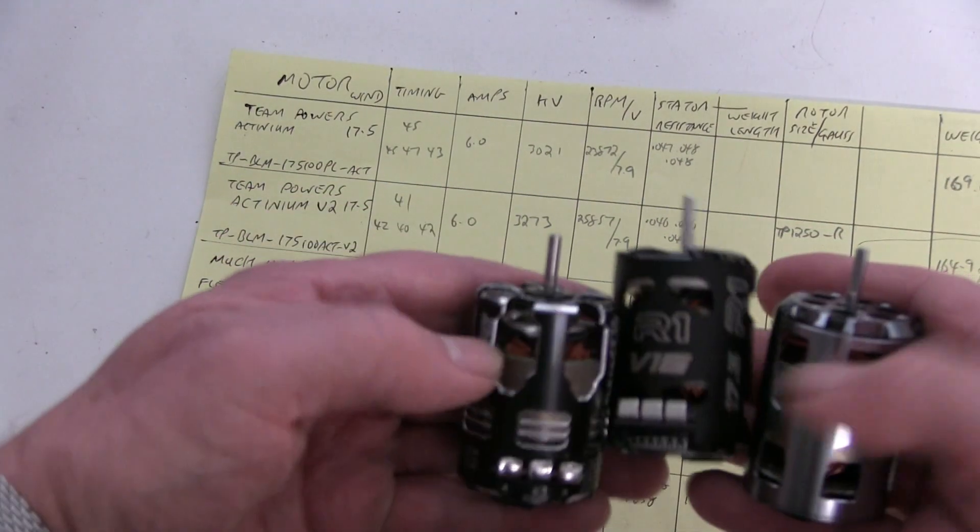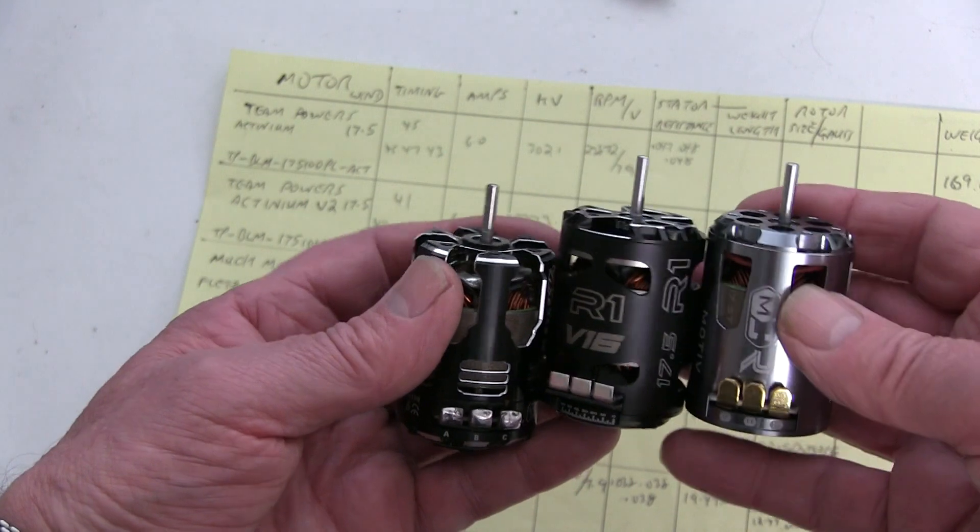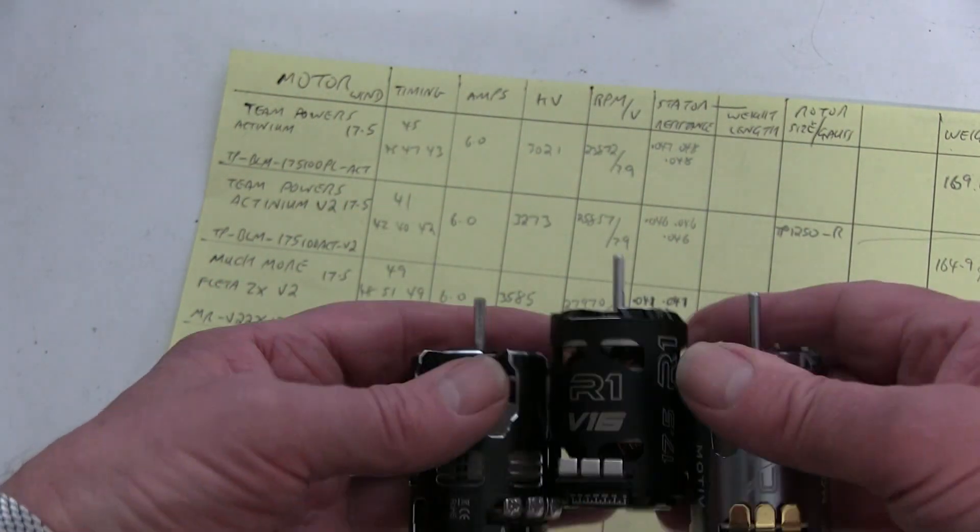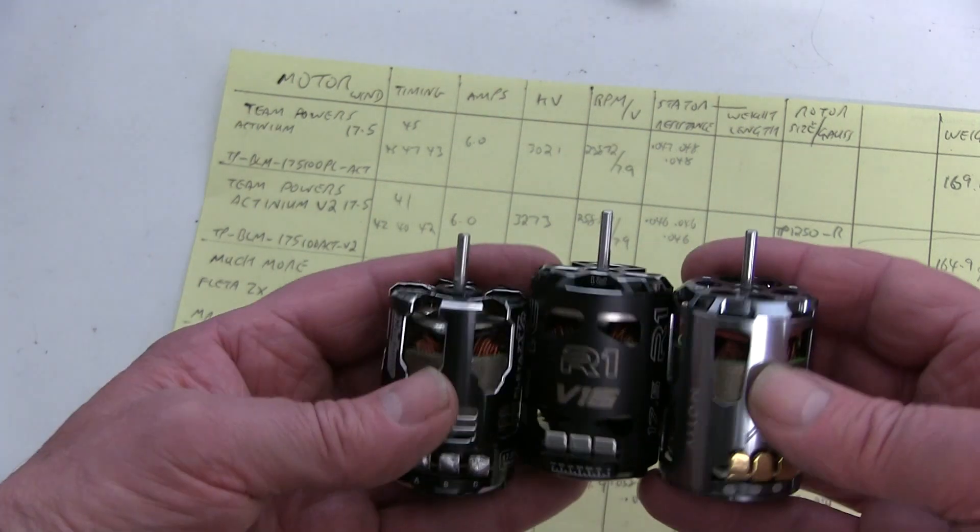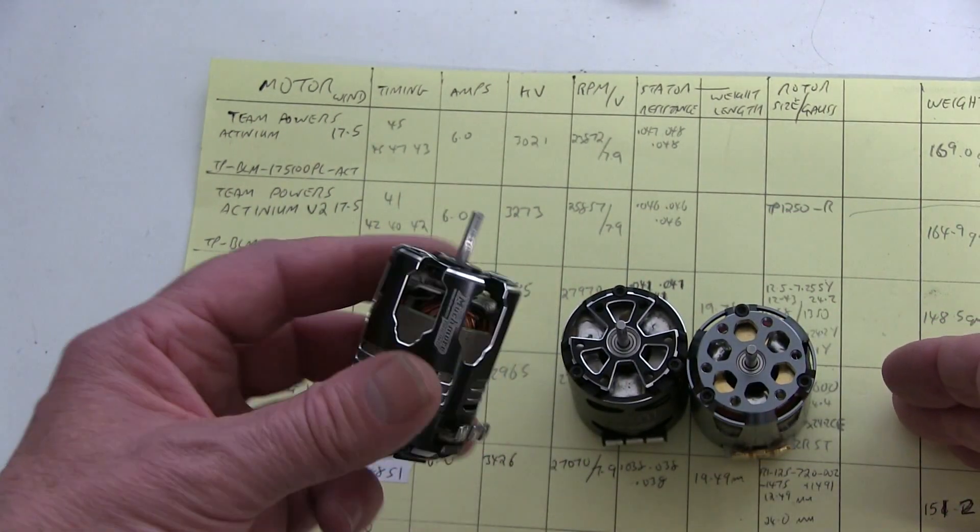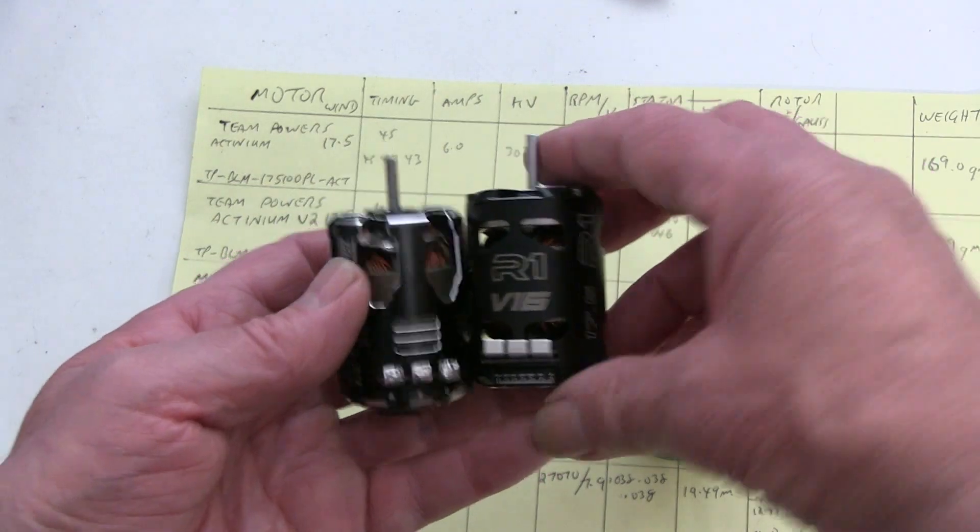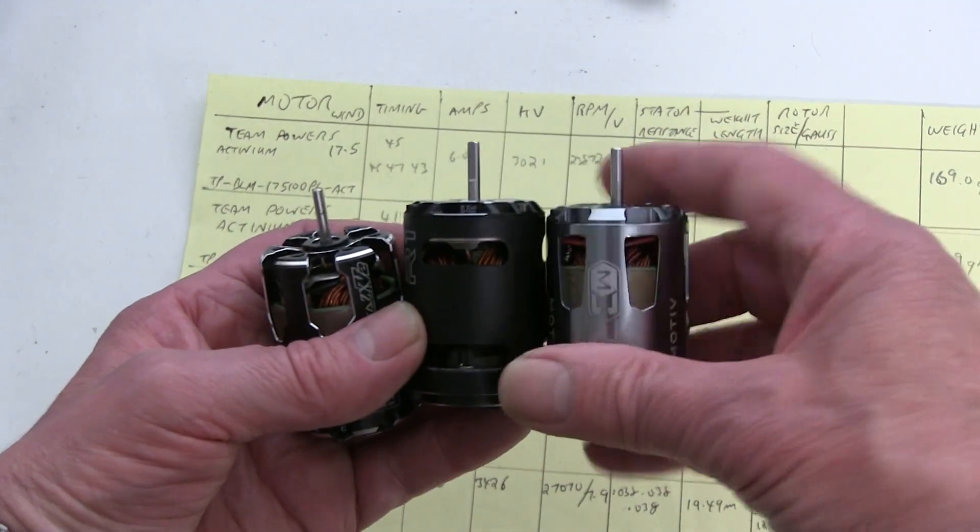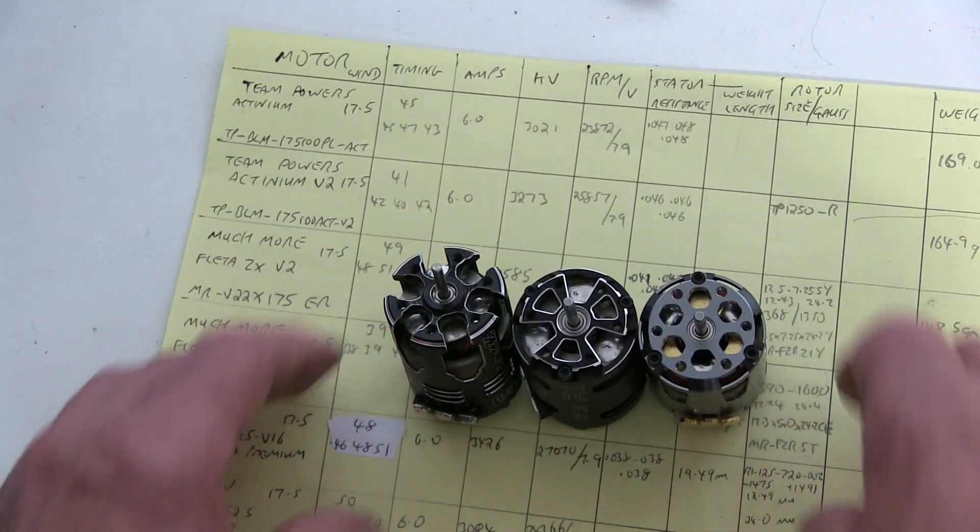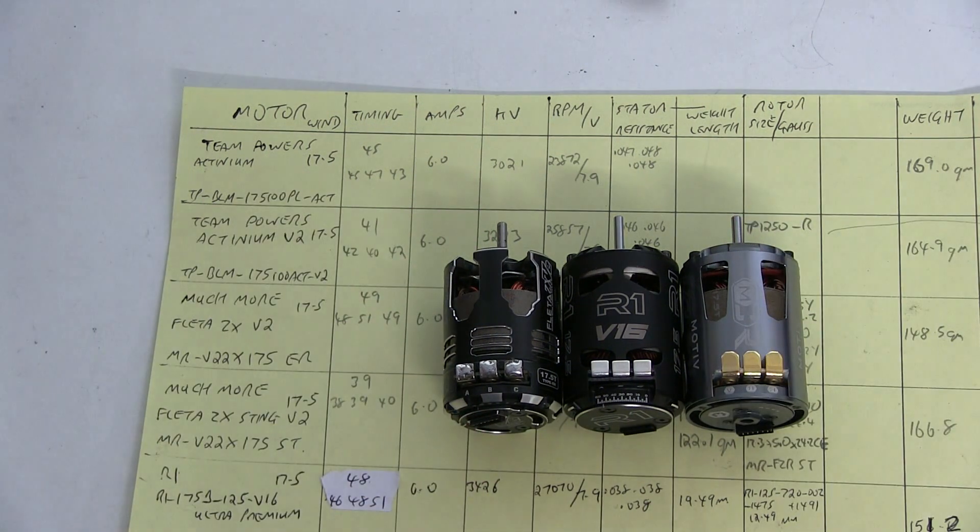They're all nicely open construction for keeping cooling, keeping the heat down, which is the thing that always causes trouble. And they've kept the weight down as best they can. And they're all doing pretty well, I think, in the design. Much More, I'd say, still looks the most fancy out of the designs. The R1 and the Motiv, again, similar. So, good motors, all three. Any one, I think, could win an A final, or compete at the highest level.